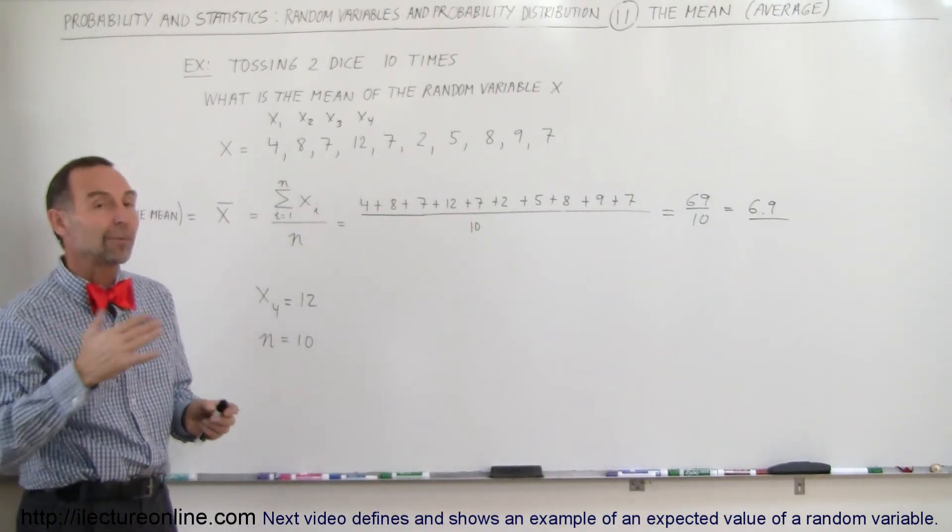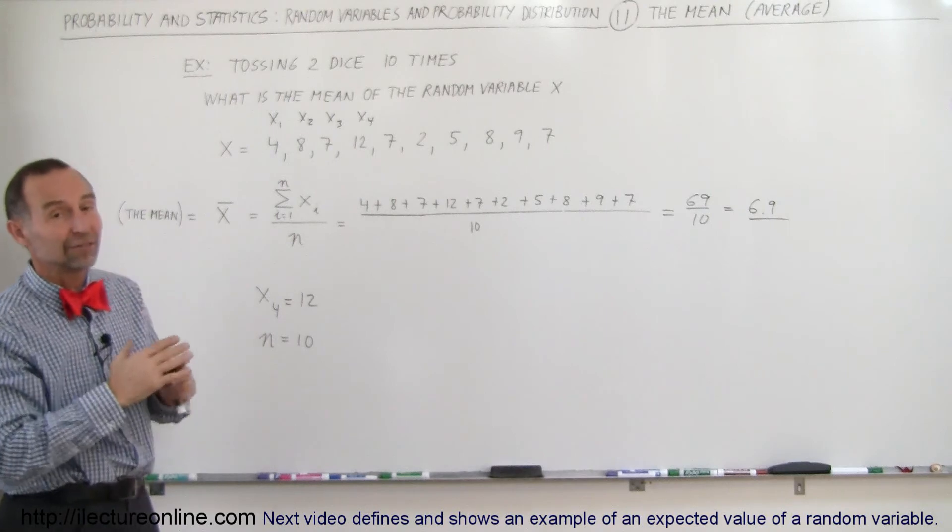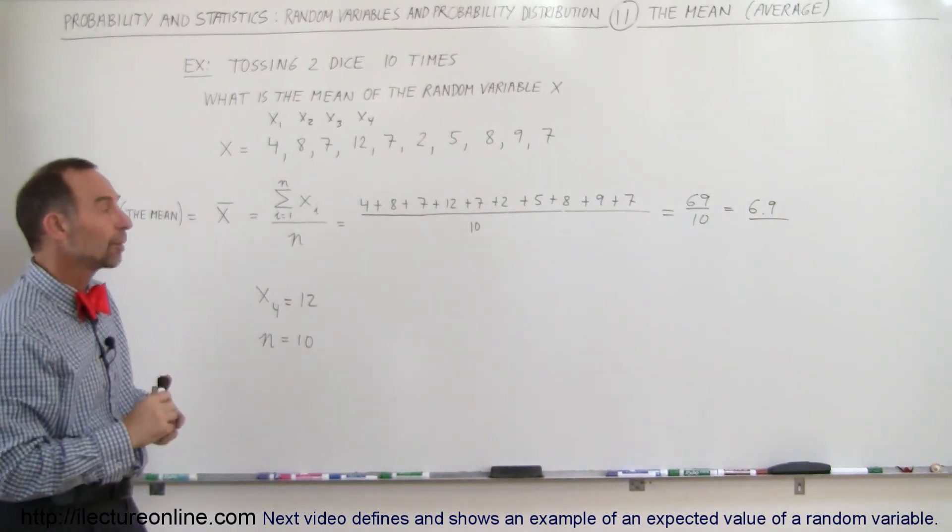the probability that you get something other than 7, and quite a bit different from 7 of course, becomes larger.